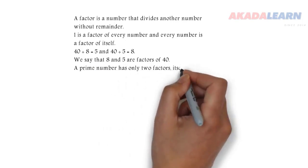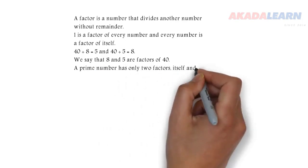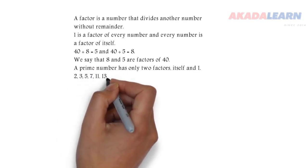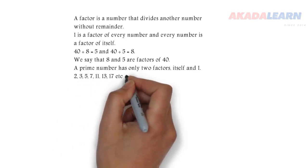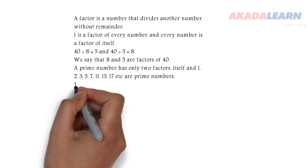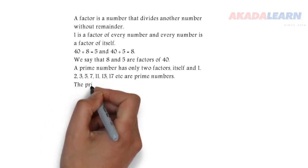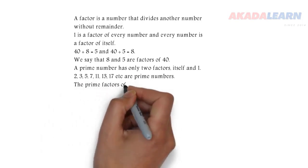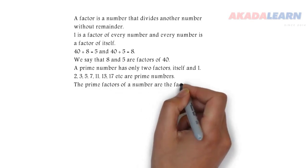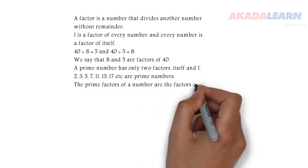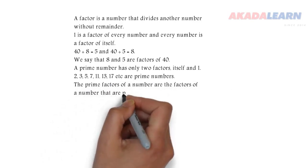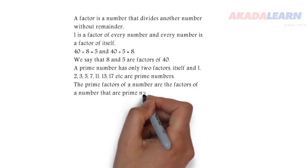Let's see the definition of prime number now. A prime number is a number that has only two factors — itself and 1. Any number that only itself and 1 can divide is called a prime number. Examples of these numbers: 2, 3, 5, 7, 11, 13, 17, etc.